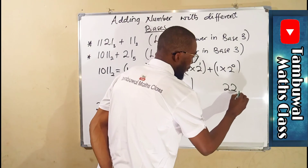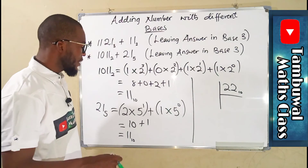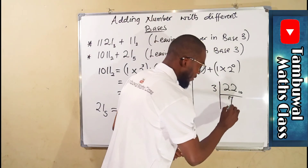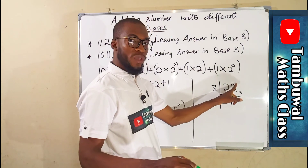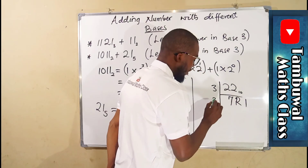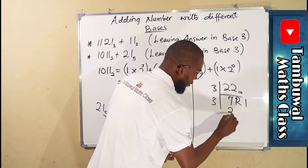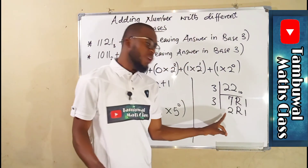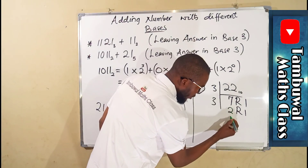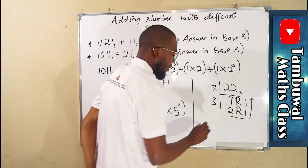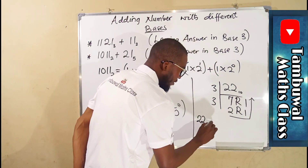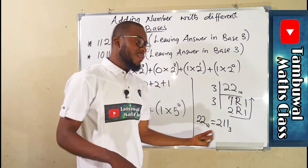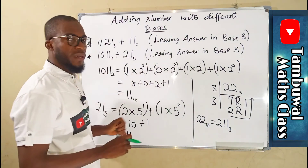We perform successive division of 22 using 3. 3 goes into 22 seven times — 7 times 3 is 21, so remainder is 1. Then 3 goes into 7 two times — 2 times 3 is 6, so remainder is 1. Then 3 cannot go into 2, so we stop. Reading the remainders upward: 22 in base 10 equals 211 in base 3. So 211 in base 3 is the result of adding those two numbers together, leaving the answer in base 3.